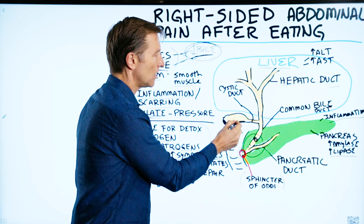The frequency of eating also matters. If you're eating three meals a day and two snacks, it never gives this system a chance to rest and reset. If you have a problem with this, you need to do intermittent fasting — it gives this entire area a chance to rest and reset. And finally, omega-6 fatty acids like vegetable oils — corn oil and soy oil, which are in so many different foods — are going to create a lot of inflammation in this area.